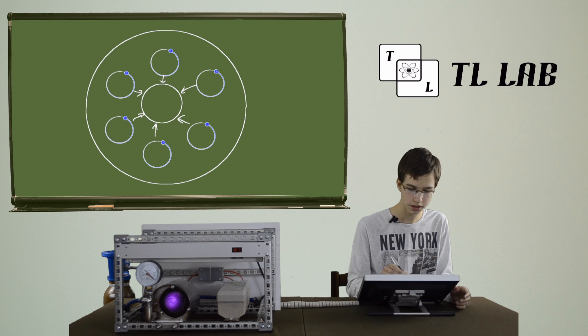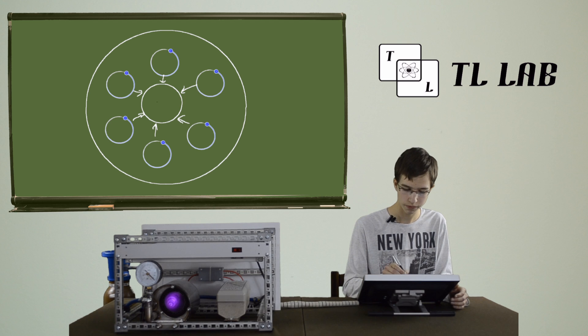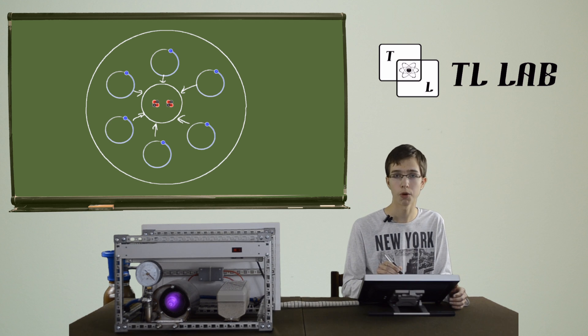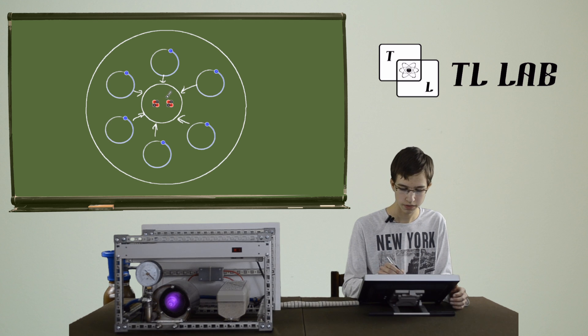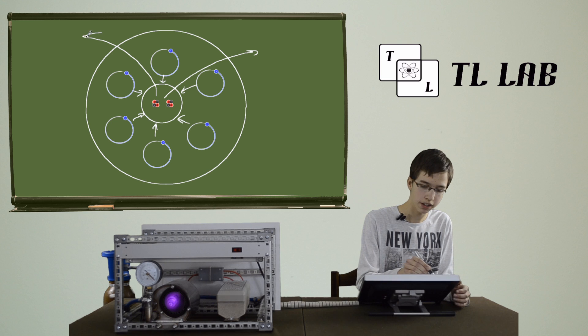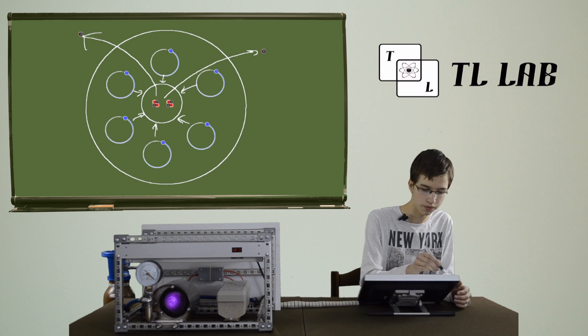In that process, a new chemical element is created: helium. Its isotope helium-4, and also in each process, in our case, one neutron is released and also energy.